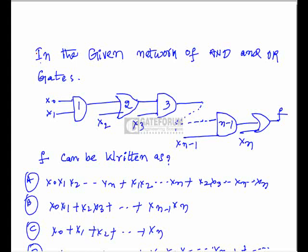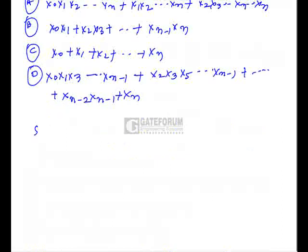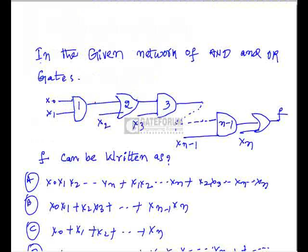In the given network of AND and OR gates, x0 and x1 are inputs to the first AND gate. The output of that AND gate serves as one input to the next OR gate, along with x2, and this pattern continues. We need to find the expression f.